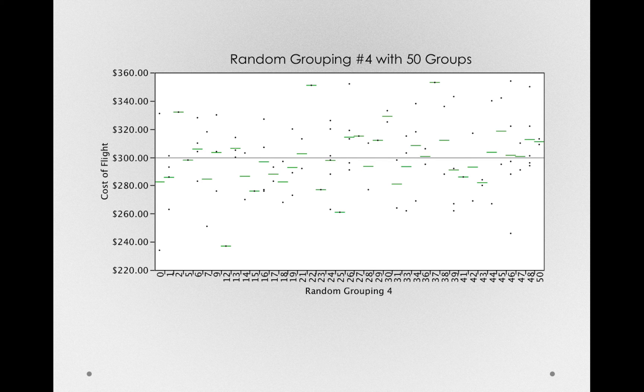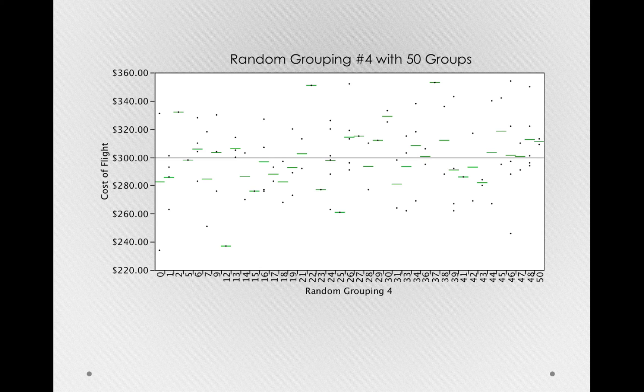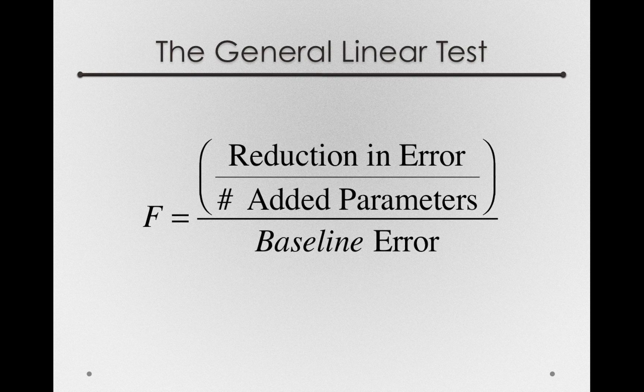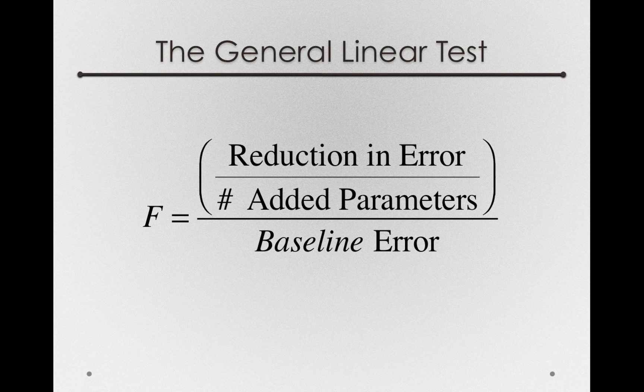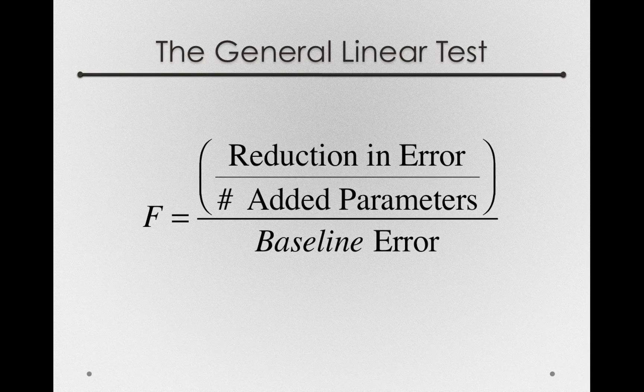Assuming we have the same number of observations, notice that when you have the same number of observations, the same number of people, and you randomly group them into 50 groups, well, each of those group means will deviate considerably from the grand mean. There's simply fewer people in each group. So our general linear test in the numerator is really a function of how much we've reduced error per parameter added.